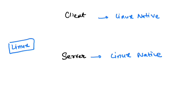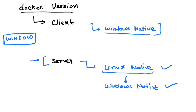Linux is the most widely used distribution for Docker today — both in the cloud and in production environments — because most applications are supported on Linux. However, for specific apps that run only on Windows Server, you can use a Windows Docker setup where both client and server are Windows native.